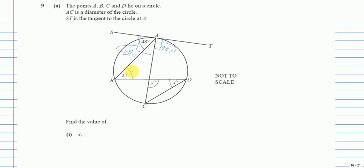Now, find the value of X. These angles in the same segment of the circle are equal. This angle starts from B and ends at C, and this other angle also starts from B and ends at C. Both starting at B and ending at C means they have to be equal. So if this is X, then this is also X. This whole thing is 90, so 90 minus 48 gives us 42.